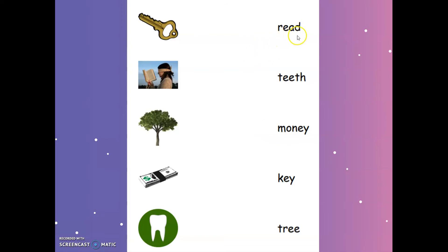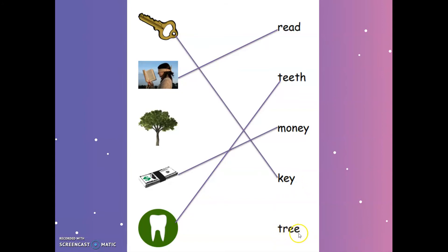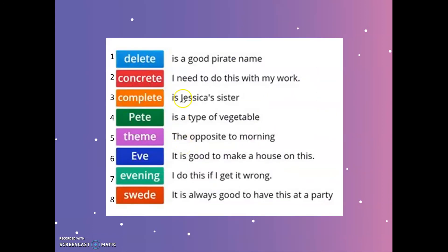Here we have some matching. We're going to read the word and then look for its picture. First word: read — there's the picture, the girl is reading a book. Next word: teeth — very easy, there it is. Then money — there it is. And 'ee' key — there's its picture. Our last word: t-r-e-e tree — and there it is.